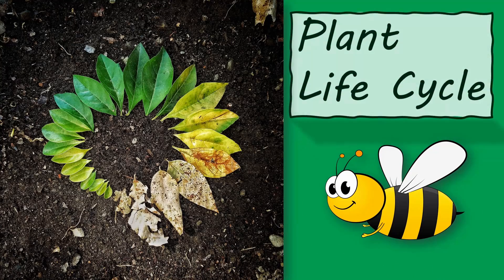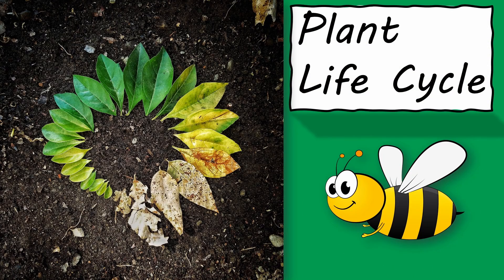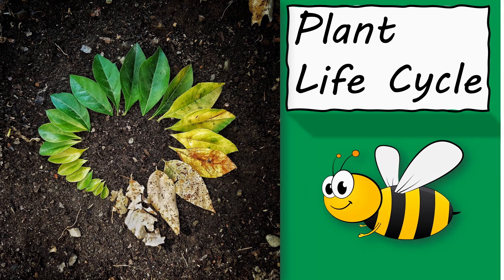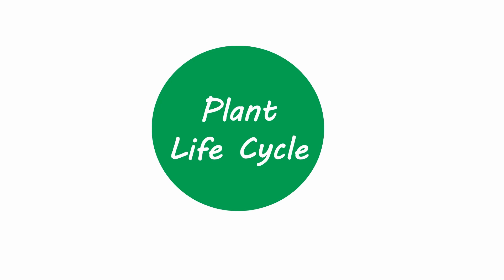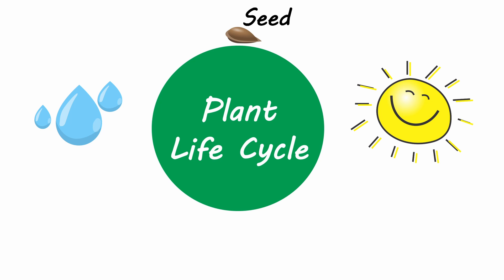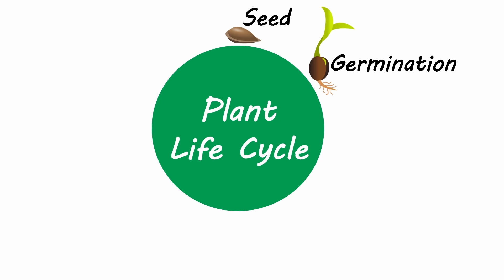Now, let's talk about life cycles. Humans, animals, and plants go through life cycles. A life cycle is a series of stages a living thing goes through during its life. For a plant, it starts with a seed. Imagine the seed as a baby plant inside a protective coat. The seed contains everything the plant needs to grow. When a seed gets the right conditions, like water and sunlight, it begins to sprout. This is called germination. The seed coat cracks open, and a tiny root starts to grow down into the soil, while a little stem pushes upward.